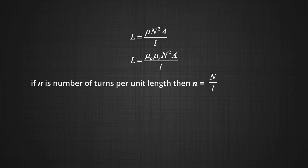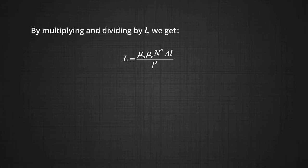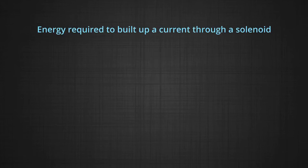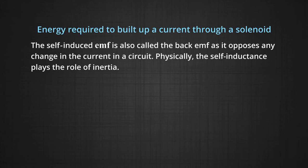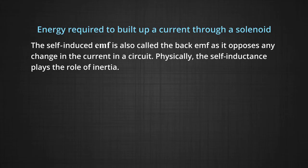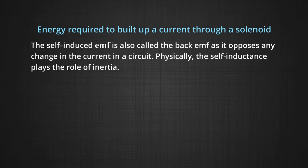Now, the energy required to build up a current through a solenoid. The self-induced EMF is also called the back EMF as it opposes any change in the current in the circuit. That means as the current is trying to grow through the circuit, the back EMF is trying to pull it back. So physically the self-inductance plays the role of inertia and opposes growth and decay of current in the circuit.